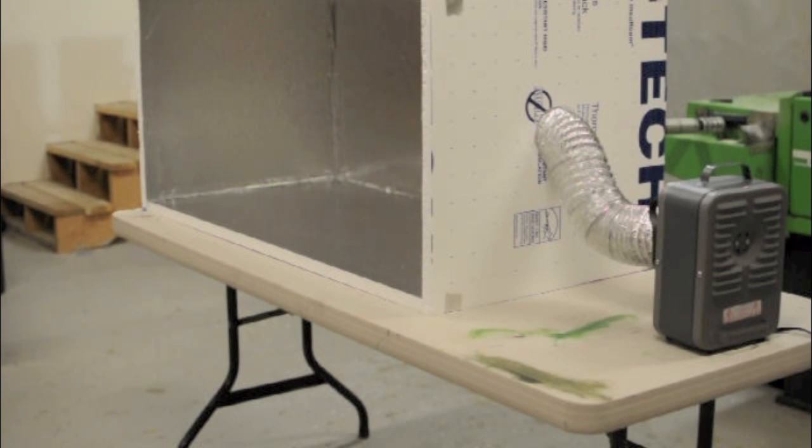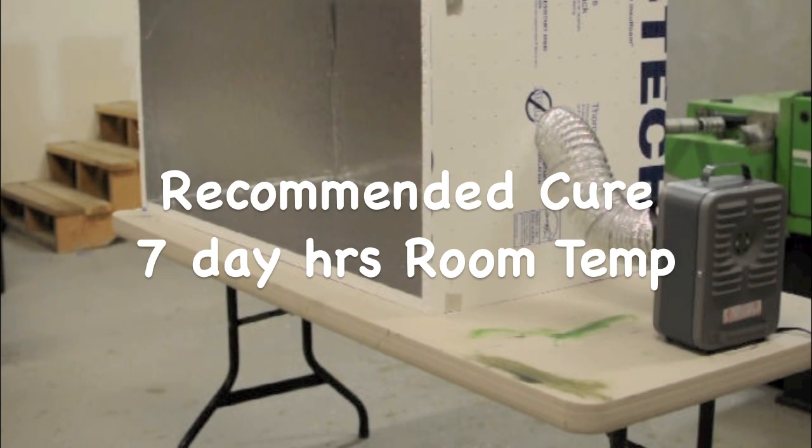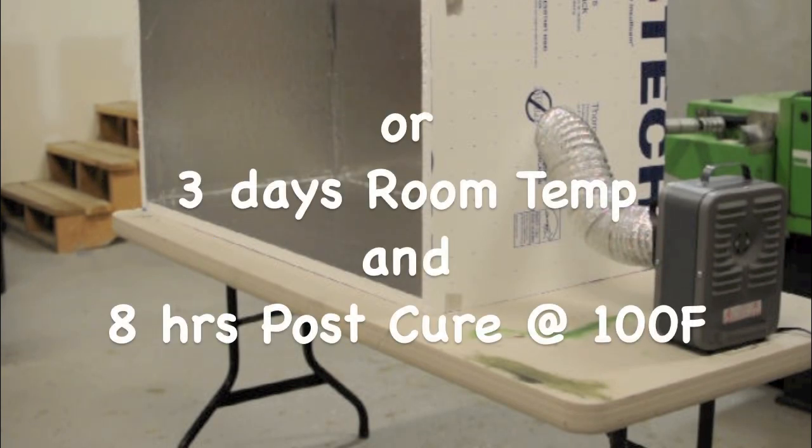One of the few drawbacks to using epoxy as opposed to other resins for castings is the long cure cycle. Our casting resins require a 7-day room temperature cure prior to demolding or a 3-day room temperature cure with an 8-hour 100-degree Fahrenheit post cure.